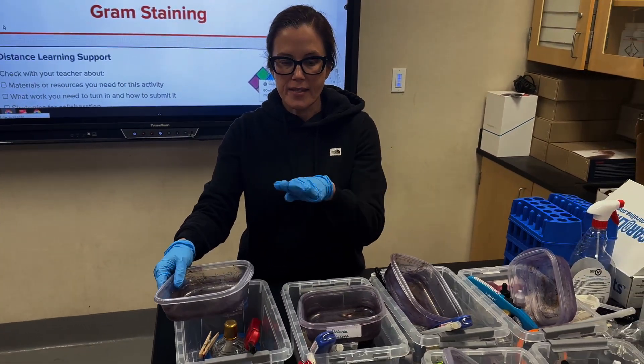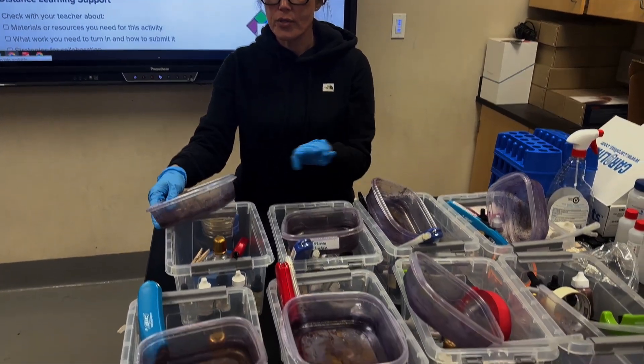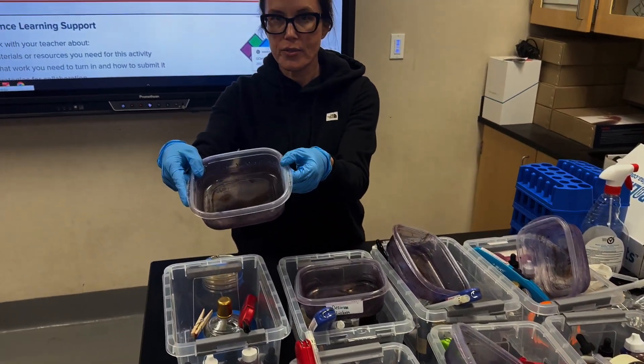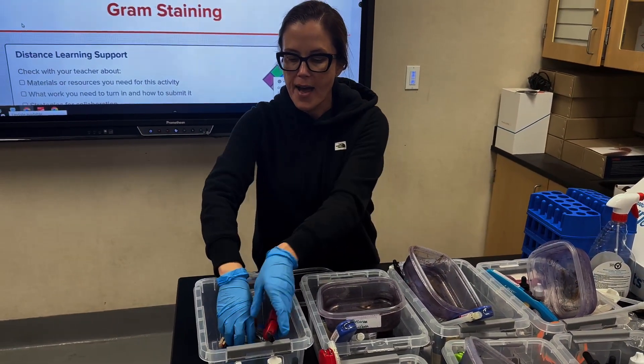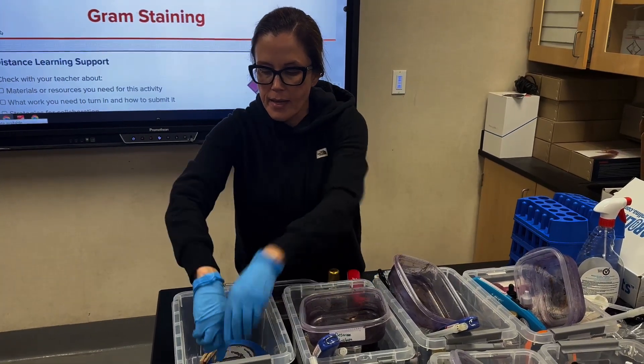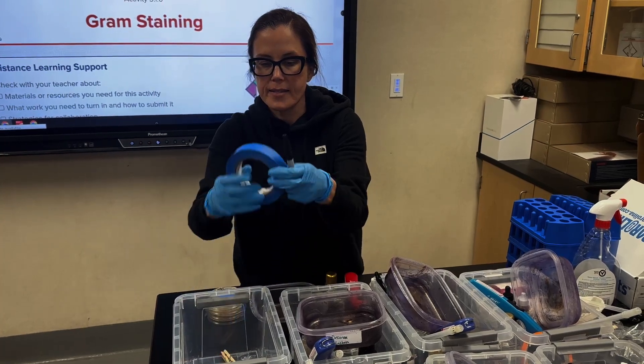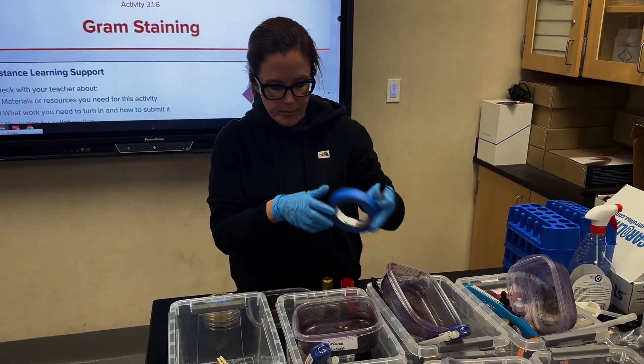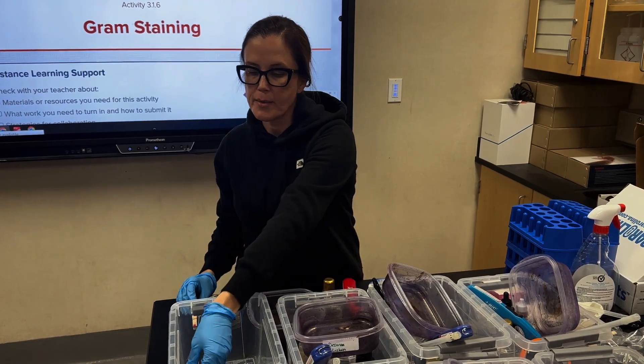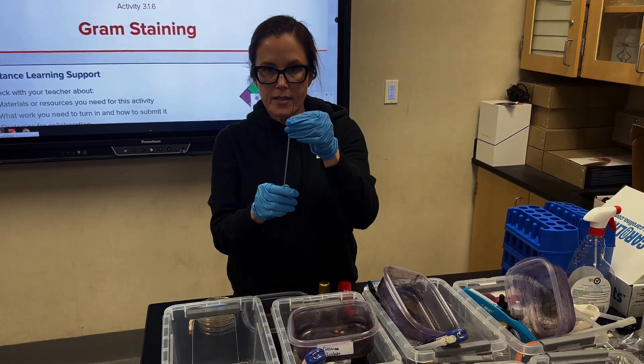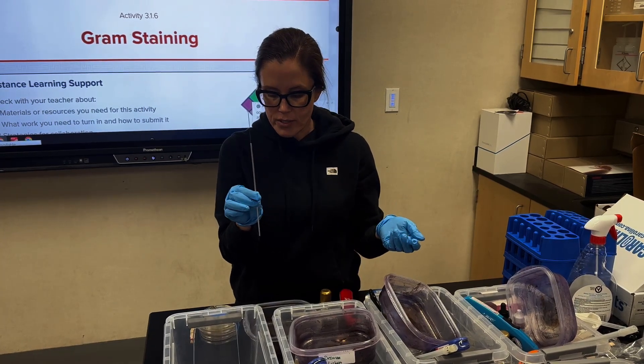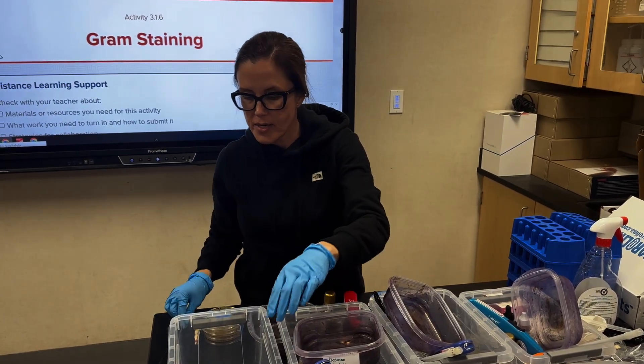In each of the student buckets I have eight lab tables with four students per table. I have a reusable dish for them to do the staining in. I have an alcohol lamp and a lighter. I've given the students a tape and marker for labeling their samples. We have a clothespin for the staining process as an inoculating loop reusable metal one. You can also provide your students with the disposable plastic ones.